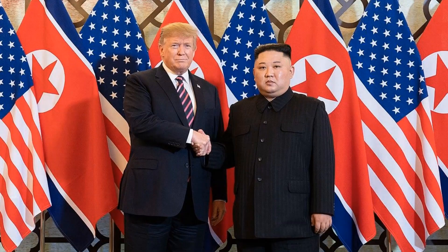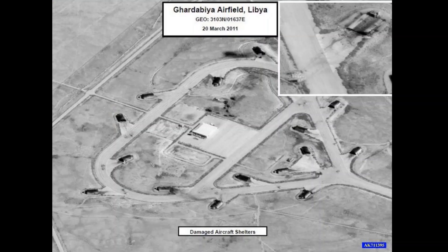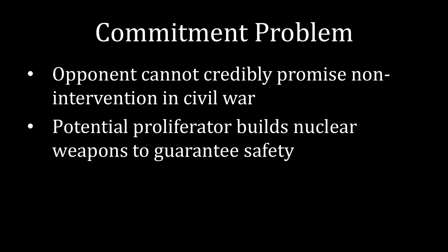Civil war concerns upend both of these assumptions. Think of it from Kim Jong-un's perspective. In any given year, North Korea doesn't really need nuclear weapons to stop the United States from intervening in civil wars, because in any given year, North Korea doesn't really have civil wars going on. But there may at some point be a civil war, and at that point we have an issue. If Kim Jong-un does not have nuclear weapons at that point, the United States has a now-or-never opportunity to overthrow the government. Failure to intervene on behalf of the rebel group will mean the rebel group gets crushed, and the United States will lose its best opportunity for regime change — exactly what happened with the United States and Libya. Put differently, we have a commitment problem: the opponent cannot credibly promise non-intervention in civil war, and the potential proliferator builds nuclear weapons to guarantee safety.